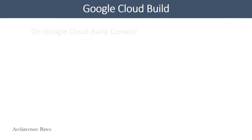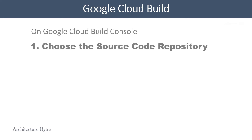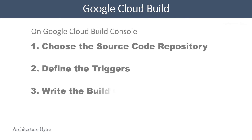At a high level, on the Google Cloud Build console you do three things: choose a source code repository, define triggers, and write the build config file. Triggers are events that cause the build config file to be executed — for example, a code push event into the repository could trigger a Cloud Build. Let us see how to write a build config file.